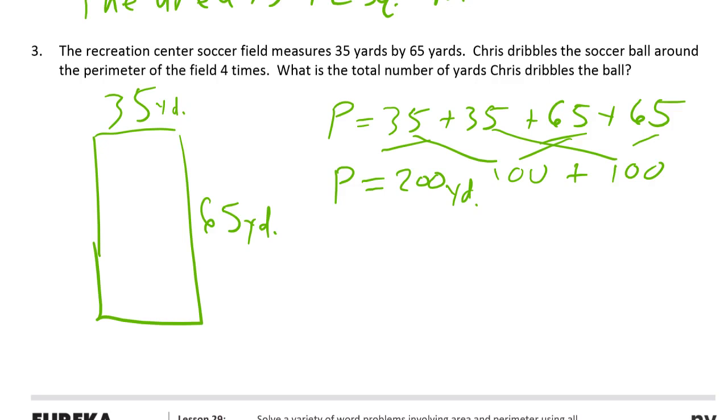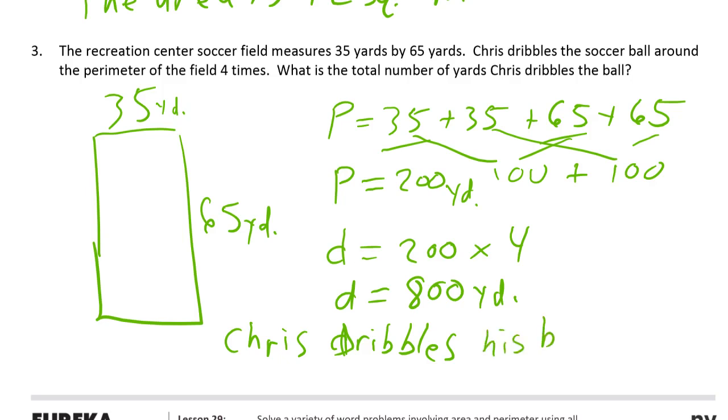So Chris dribbles, or C for Chris, whatever you want to do, is the 200 times four times he went around it, and that's 800 yards. And you could have added all this up vertically and put it one big long stack of 35s and 65s, but if you chunked it up like I did, it's a lot easier. Chris dribbles the ball for 800 yards.